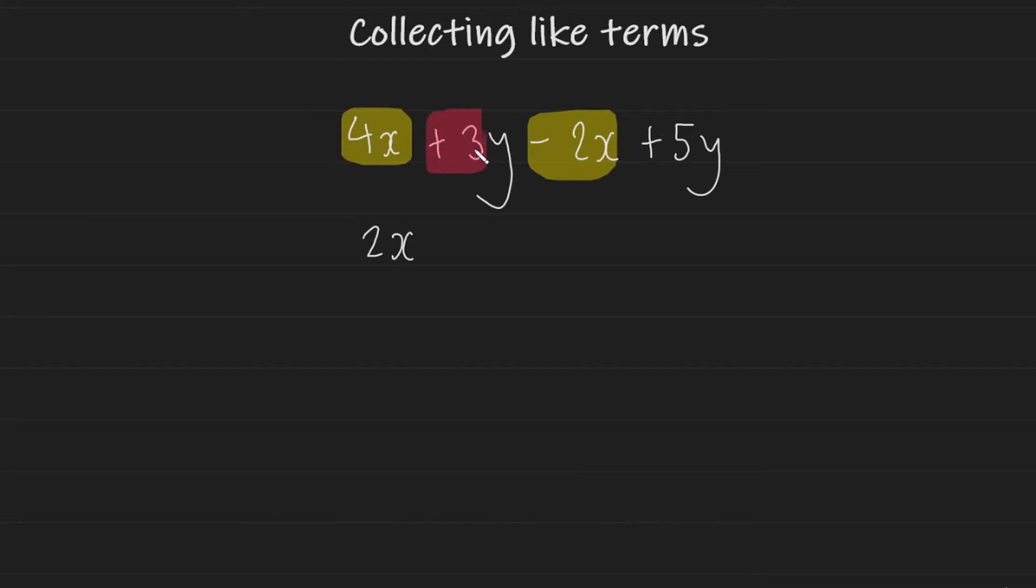Now we're going to go ahead and collect our y's. So we have 3y here and we have plus 5y here. And simplifying that, so we have positive 3y and we add 5y to that, so that's going to give us plus 8y. And that's how you'd simplify this expression by collecting like terms.